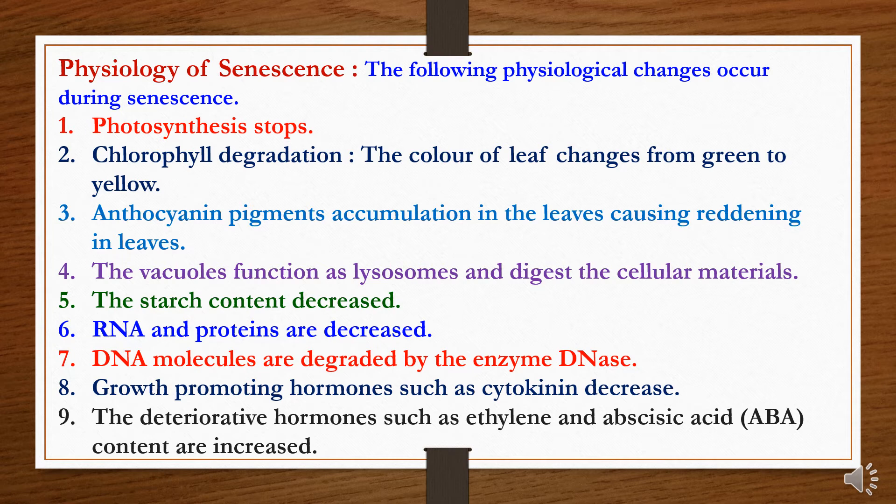Sixth, RNA and proteins are decreased. Seventh, DNA molecules are degraded by the enzyme DNase. Eighth, growth-promoting hormones such as cytokinin decrease. And ninth, the deteriorative hormones such as ethylene and abscisic acid contents are increased.